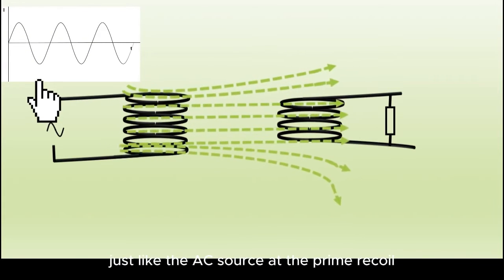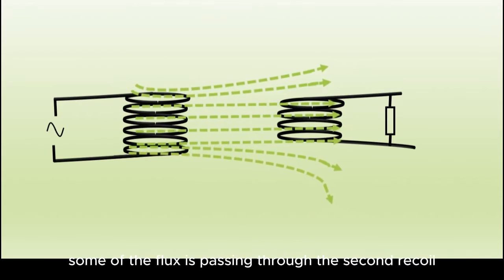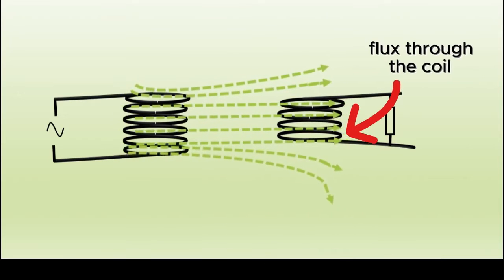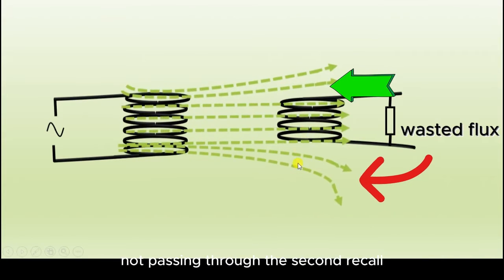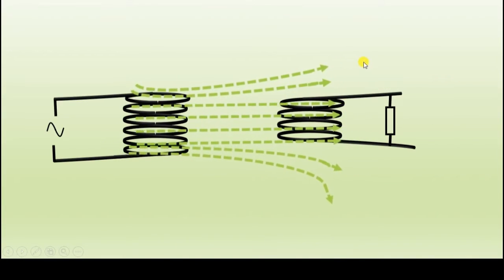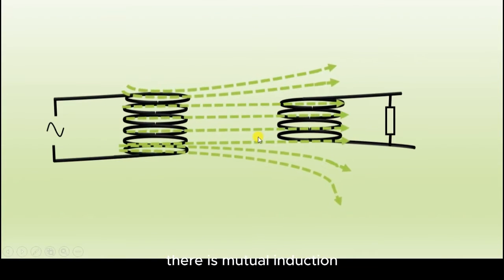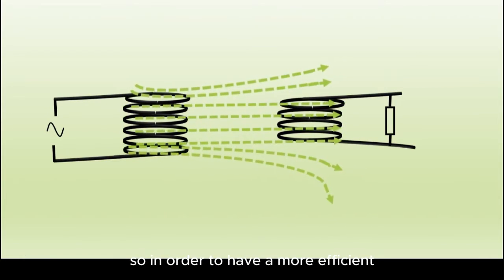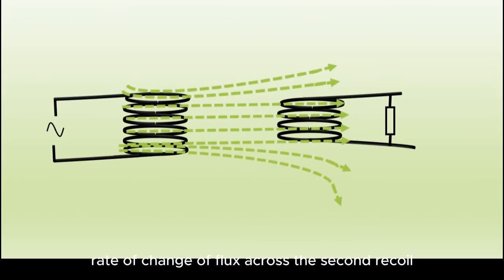This means there is an EMF induced in the secondary coil — a varying EMF just like the AC source at the primary coil. However, an important point here is that some of the flux passes through the secondary coil, but a large majority of the magnetic flux is not passing through it — it's wasted flux. So the EMF is induced through mutual induction, but it's not very efficient.